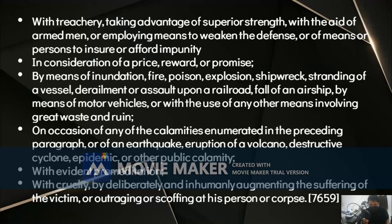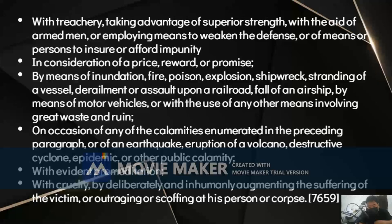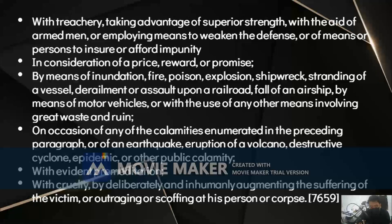Regarding 'with aid of armed men': if the accused has companions who were armed when he committed the crime, this circumstance is present — even if the companions only stood by to intimidate the victim while only one person did the actual killing. The crime is committed with the aid of armed men when at least two of the accused are armed with a weapon — whether a carbine or a bolo. The armed men must take part in the commission of the crime directly or indirectly, and the accused must avail himself of their aid when the crime was committed.